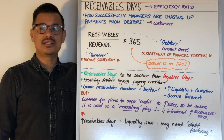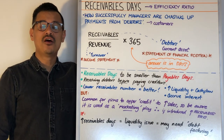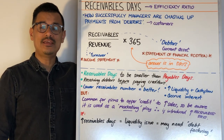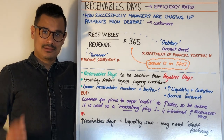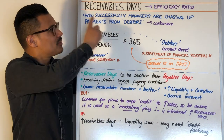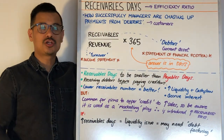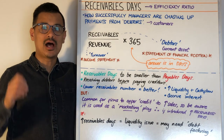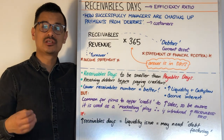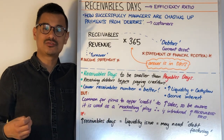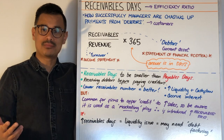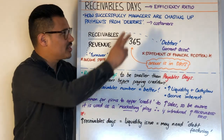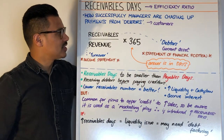Let's have a session on receivables days. This is a type of financial efficiency ratio. Receivables days measures how successfully managers are chasing up payments from debtors. Debtors come from customers where sales have been made but the money has not yet been received — so they are a debtor.